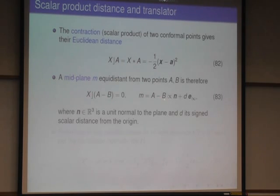In the mid-plane, the E0 component drops. You get the linear vector part that is normal, naturally normal, to the mid-plane, which goes from a to b. And you get this d here as a coefficient, and this is the distance from the origin.